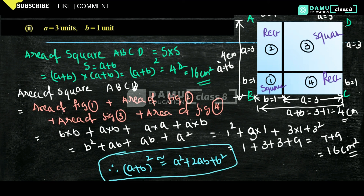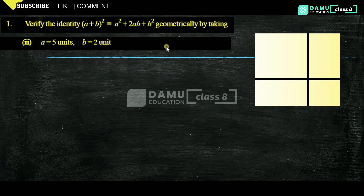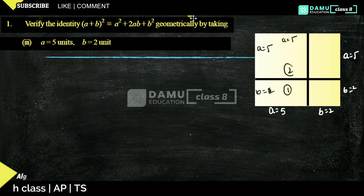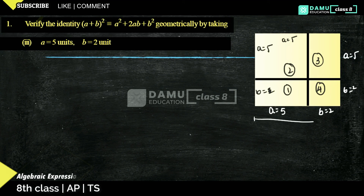Thanks for watching, please subscribe. Hello viewers, in this module we will continue with the third example: a equals 5 units and b equals 2 units. Here a equals 5, b equals 2. The total length a plus b equals 5 plus 2 equals 7 centimetres, here also total 7 centimetres.